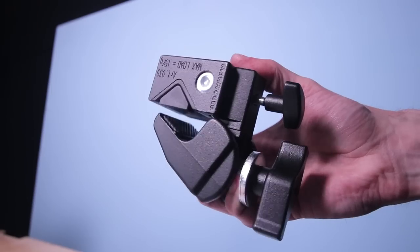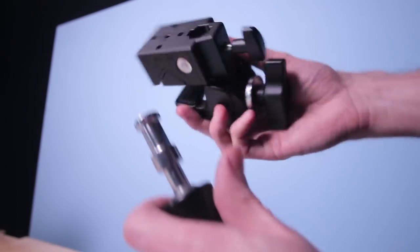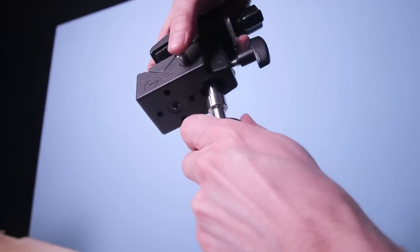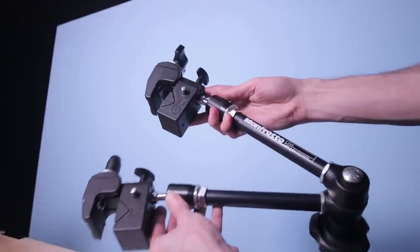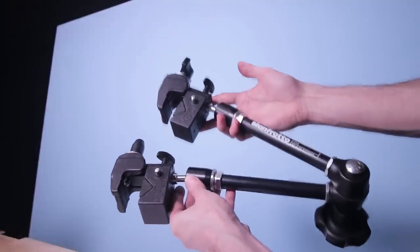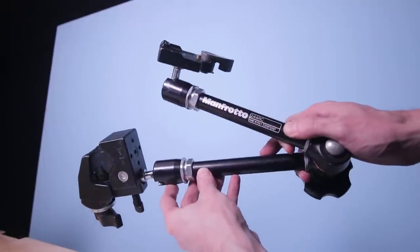Then you can attach to it clamps or a quick release plate for a camera. That way you have two configurations, one for rigging and another for a camera.